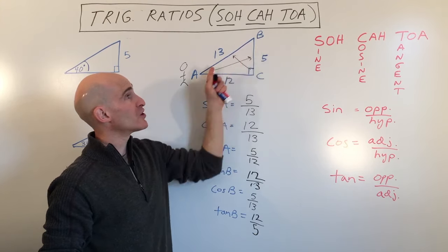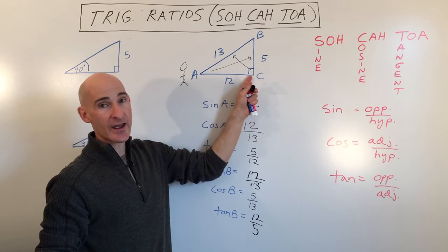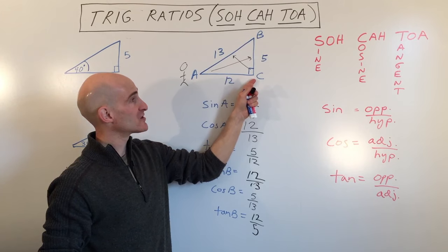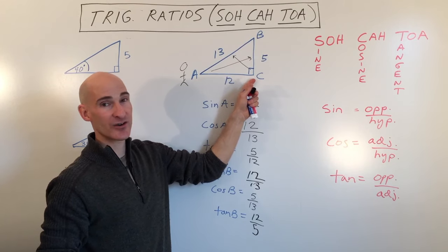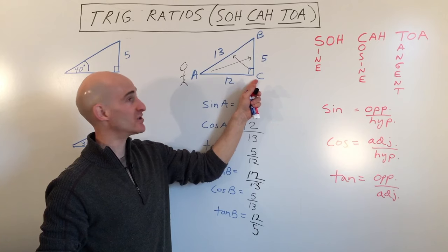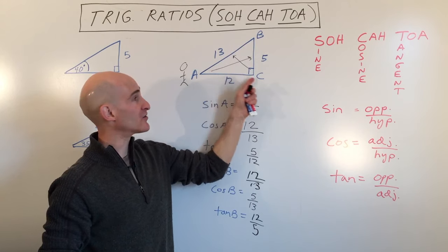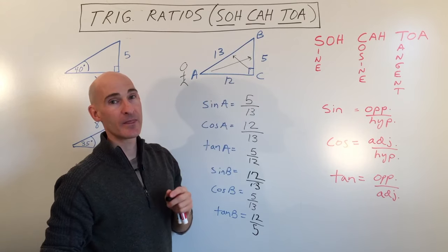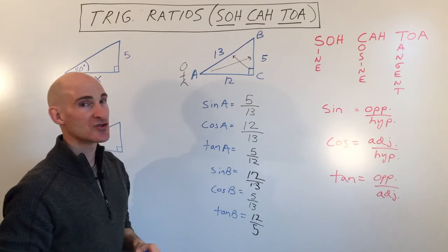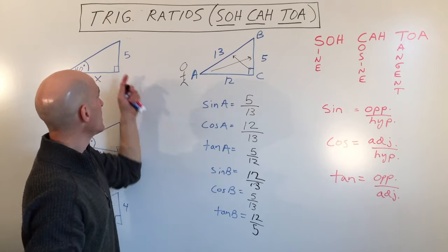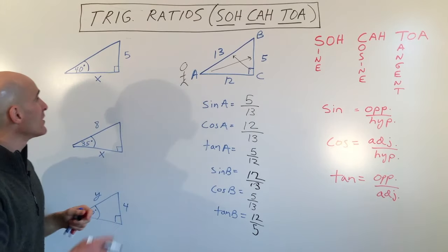We only use the two acute angles — we don't use the right angle. So there's no sine, cosine, or tangent of angle C. Now let me show you how to use these trig ratios in solving problems.